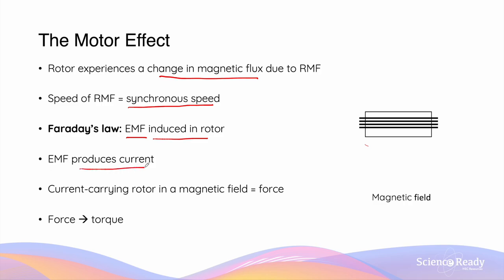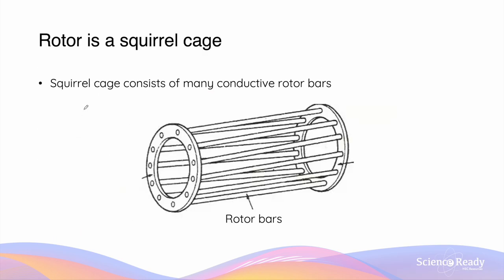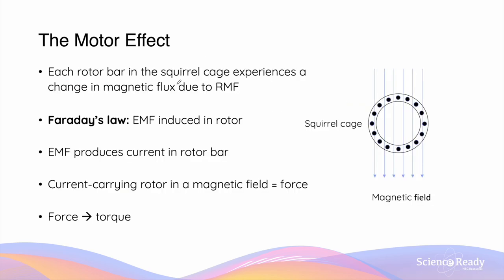This EMF will then produce current, and when we have current going through the rotor — a current-carrying conductor inside a magnetic field — there will be a force acting on the rotor. This force will produce torque, therefore allowing the rotor to rotate. When the squirrel cage is placed inside the stator of the induction motor, each rotor bar in the cage will experience a change in magnetic flux due to the rotating magnetic field.